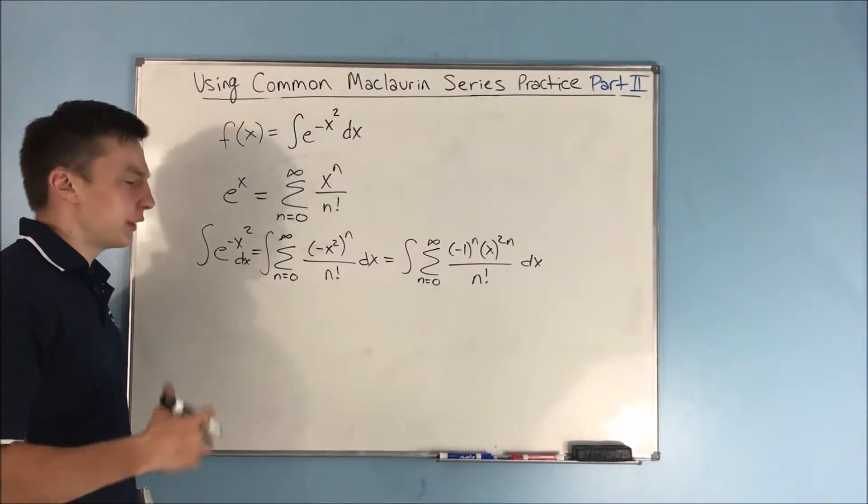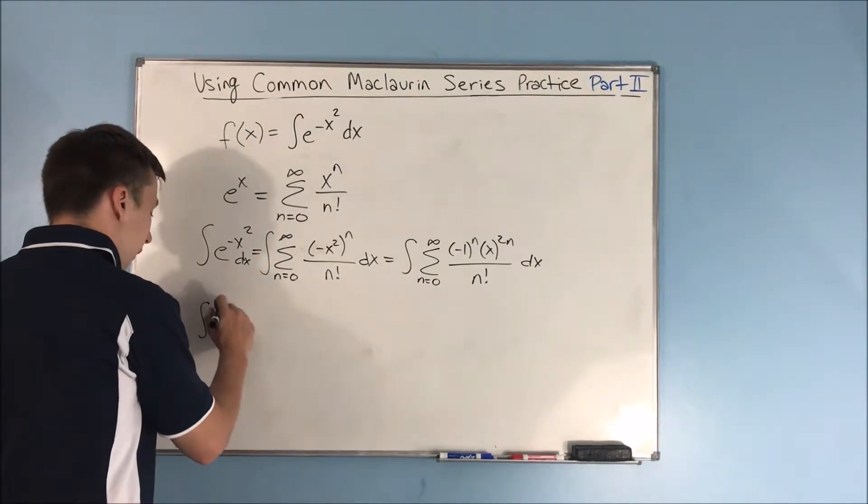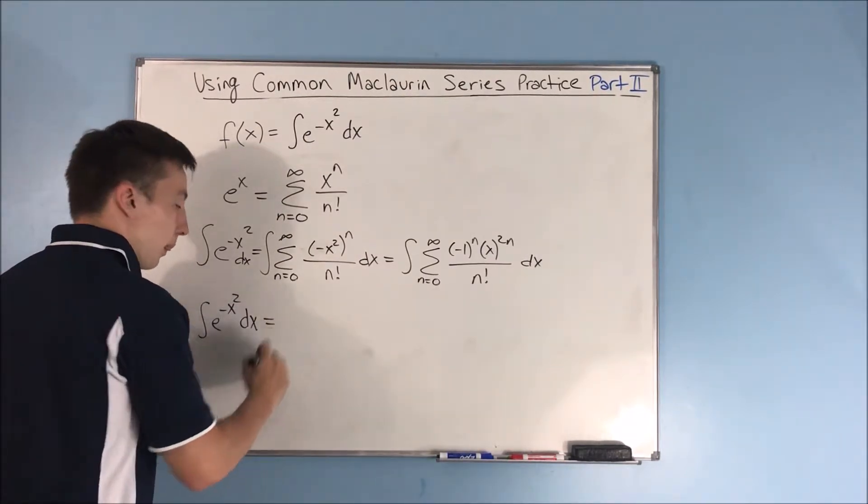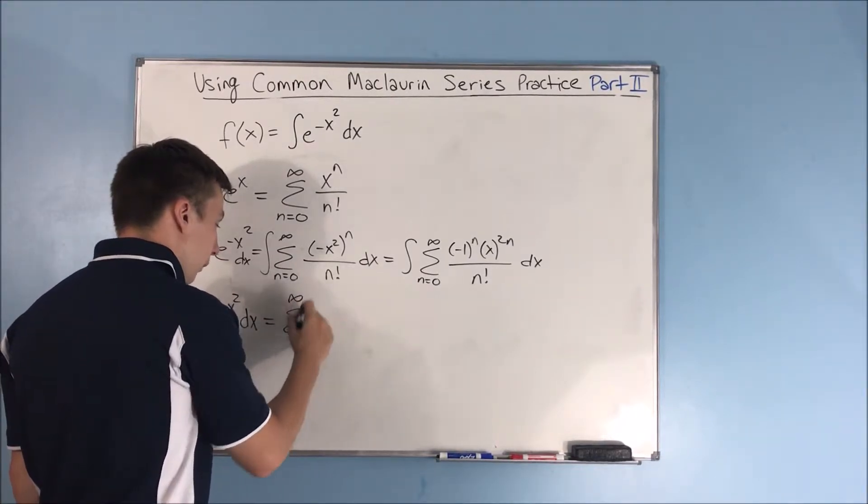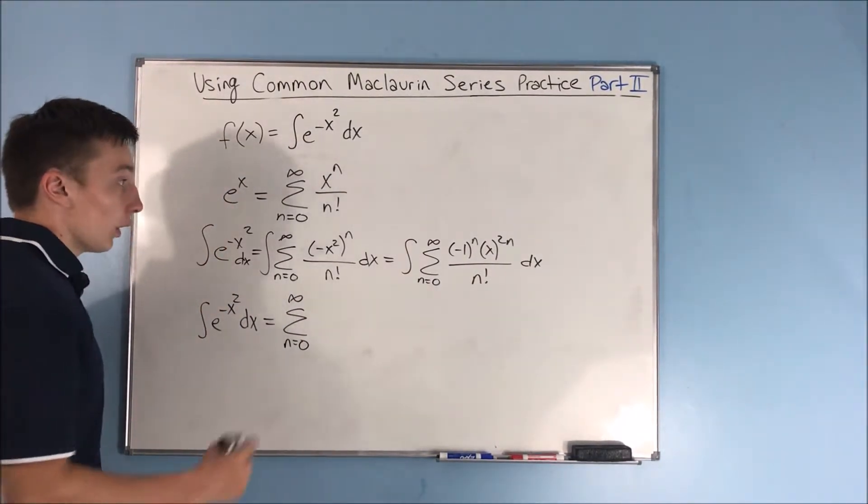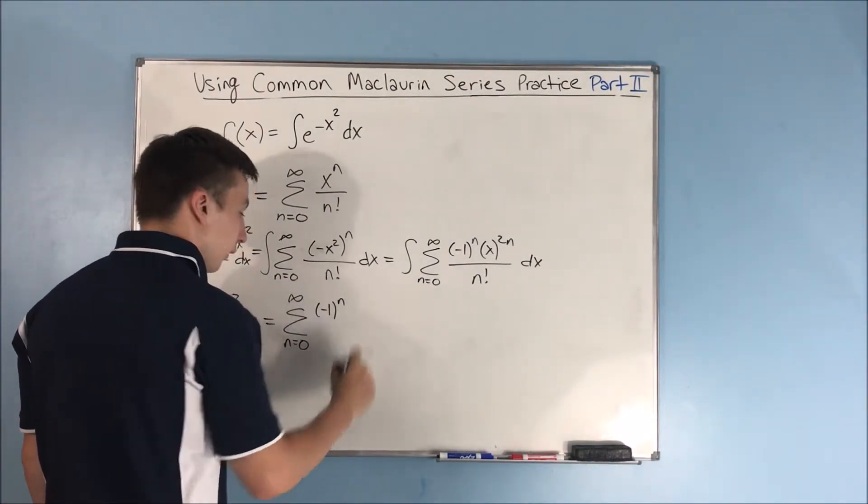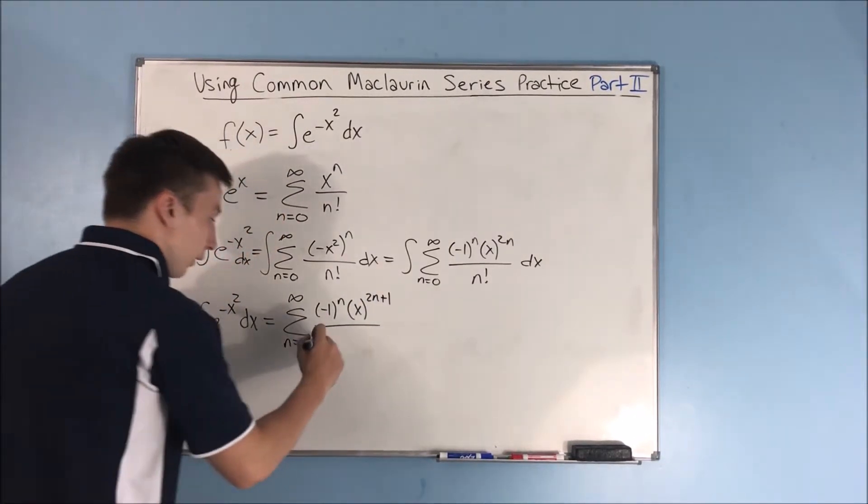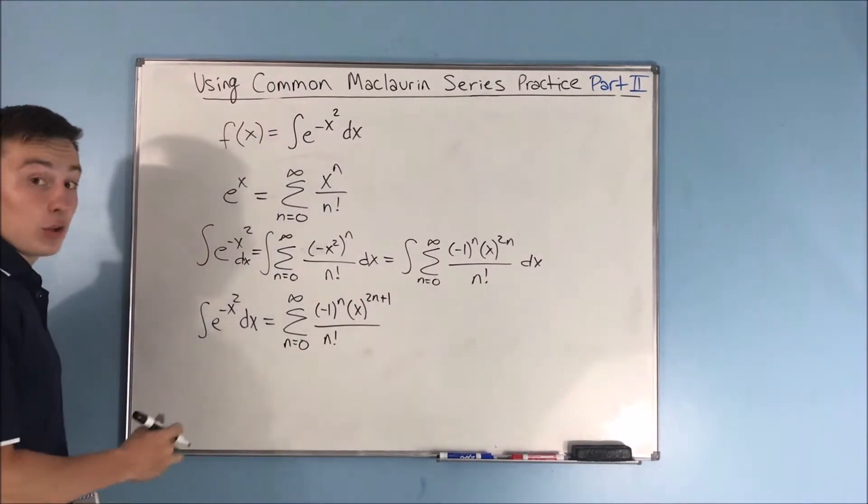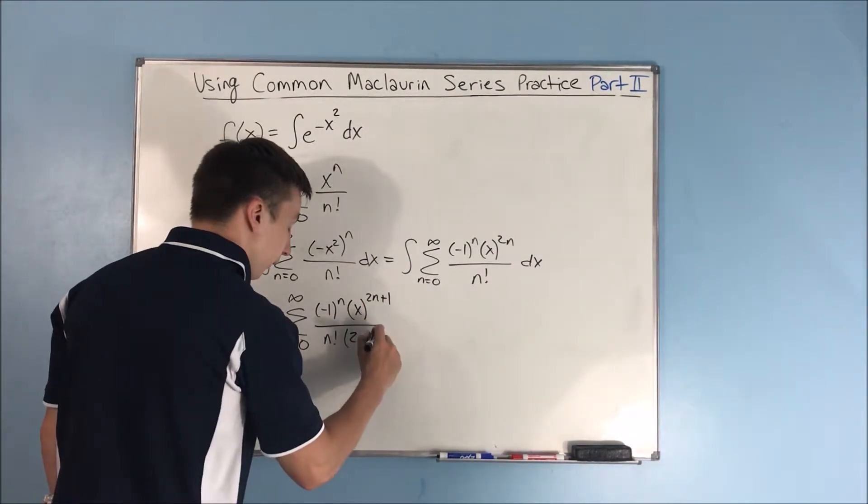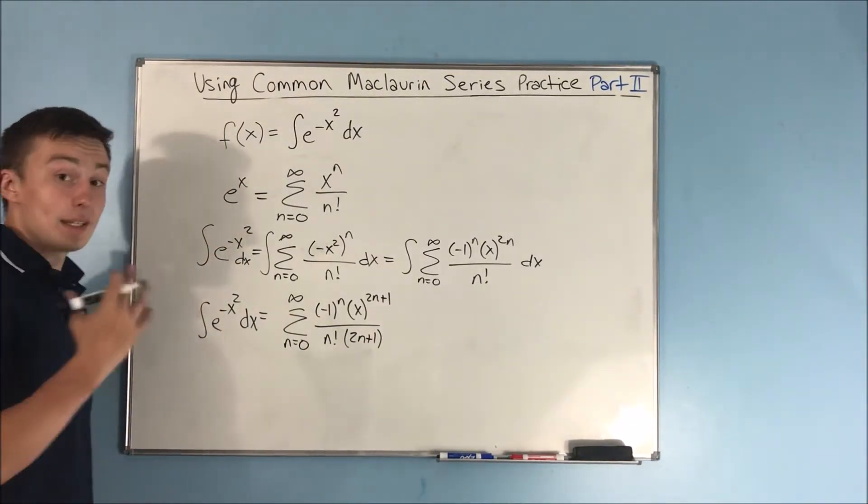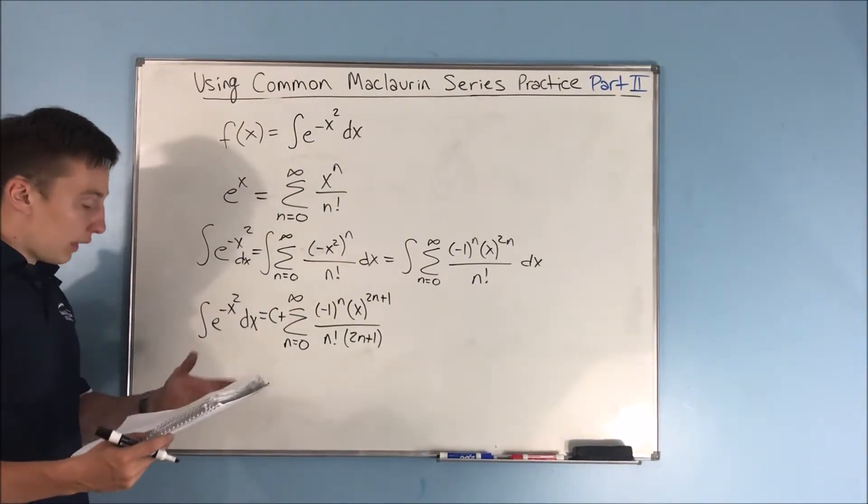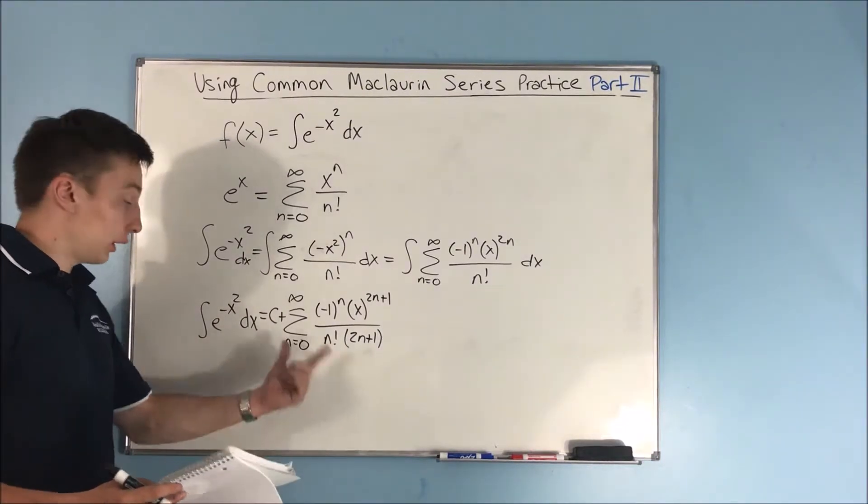If we do that, we get that the integral of e to the negative x squared dx is equal to the sum from n equals 0 to infinity of negative 1 to the n times x to the 2n plus 1 over n factorial times 2n plus 1. And one thing that is missing that we definitely need here is that plus C. So that's great. Now we have a power series representation for this integral.